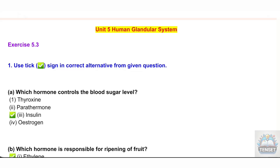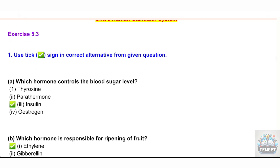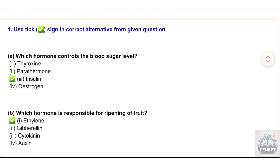Unit 5: Human Glandular System, Exercise 5.3. Question 1: Use a tick/check mark to identify the correct alternative. A) Which hormone controls the blood sugar level? Options: i) Thyroxine, ii) Parathormone, iii) Insulin, iv) Estrogen.